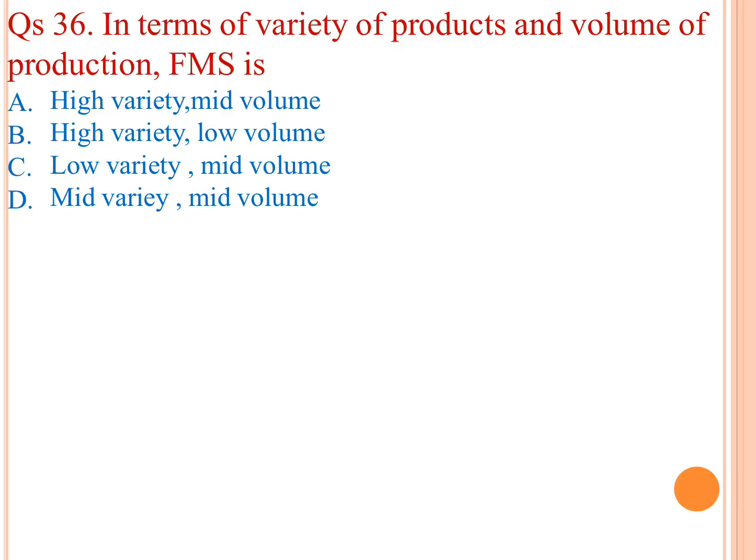In terms of variety of products and volume of production, FMS — Flexible Manufacturing System — is used for high variety and low volume.